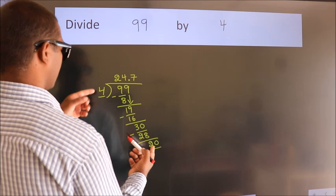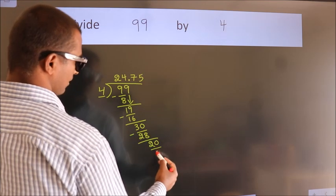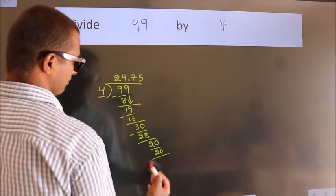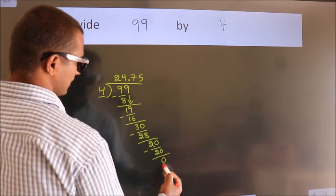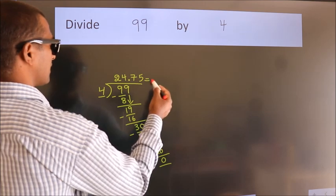When do we get 20 in the 4 table? 4 fives, 20. Now, we subtract. We get 0. We got remainder 0. So, this is our quotient.